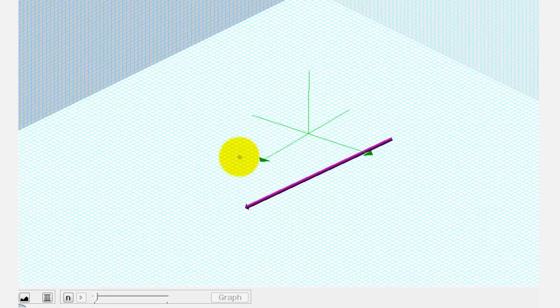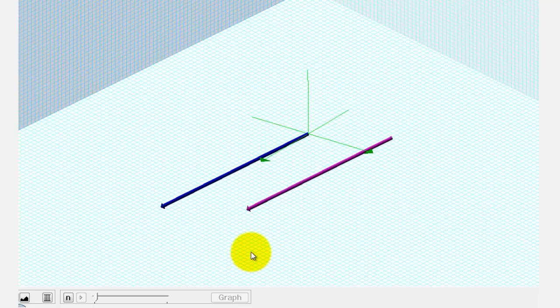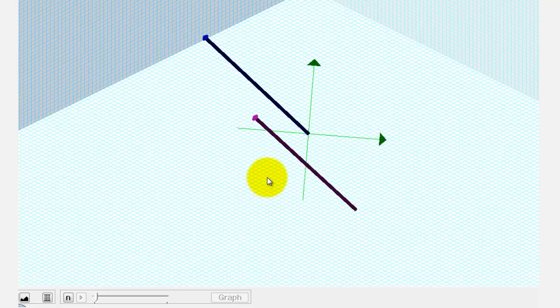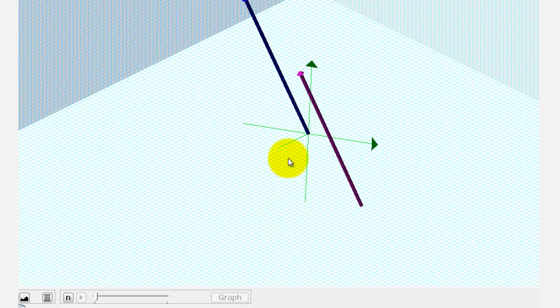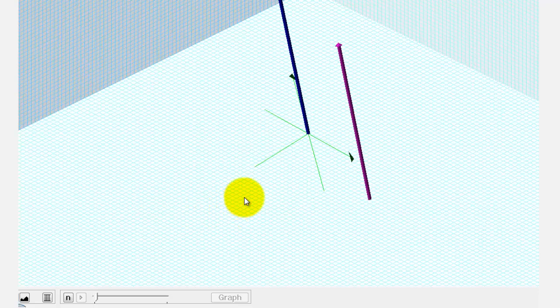Let's take a look at that vector as well. So here's the same vector in component form. Notice how the initial point is at the origin but the two vectors are parallel, pointing in the same direction, and have the same magnitude.